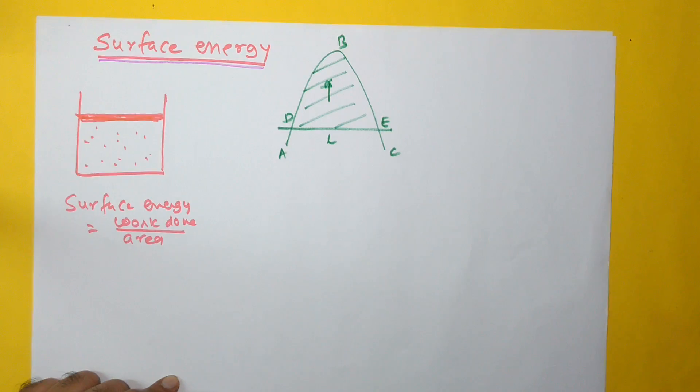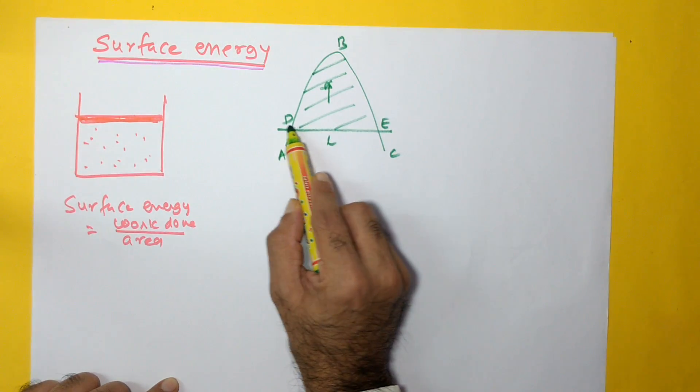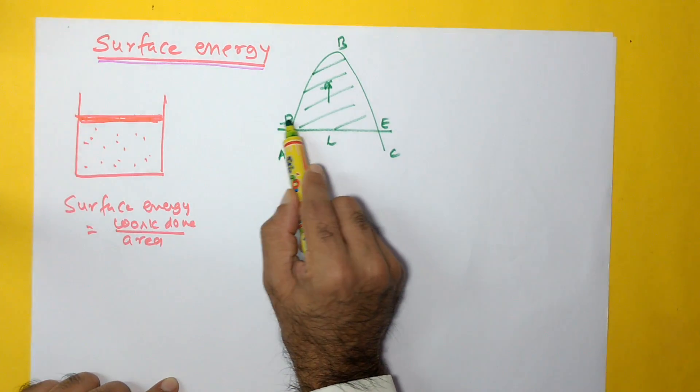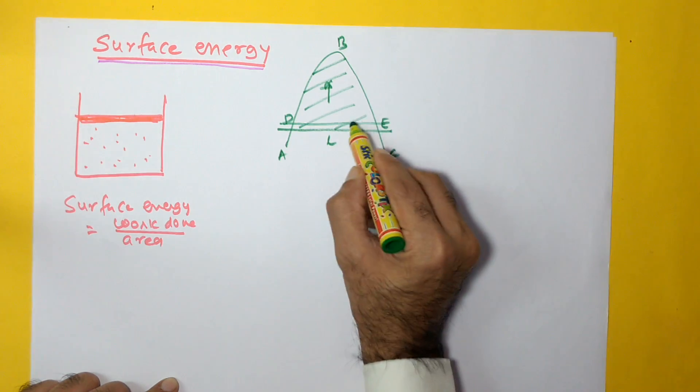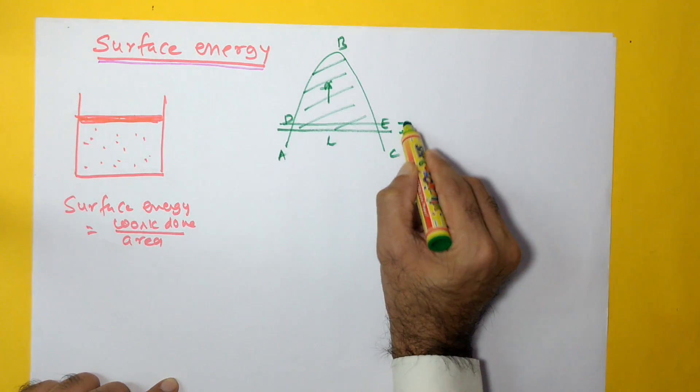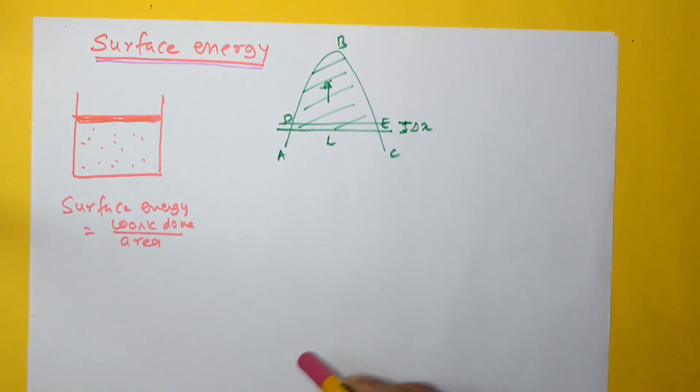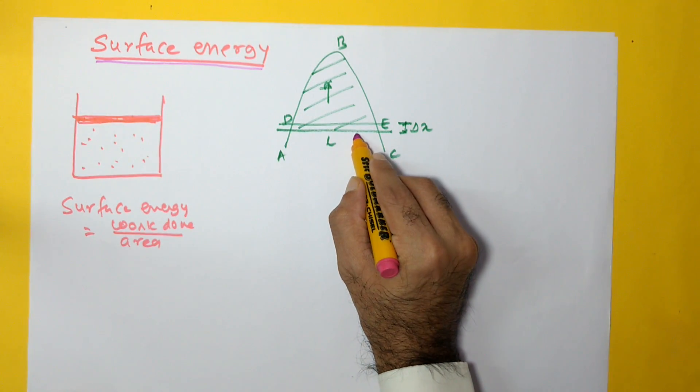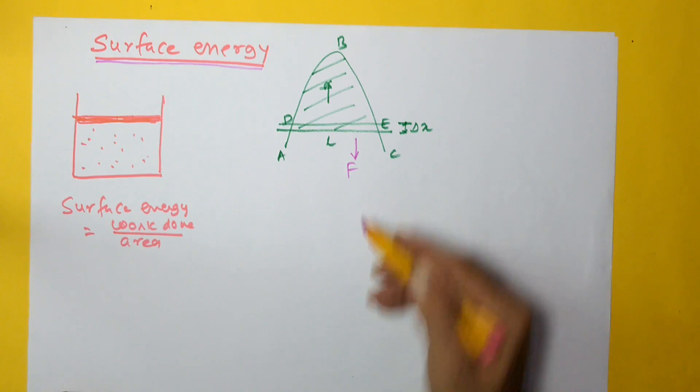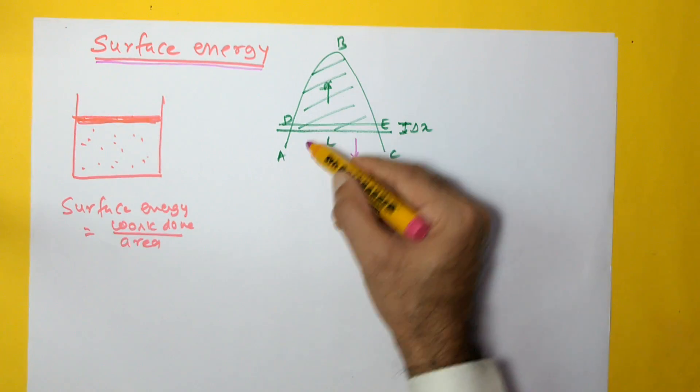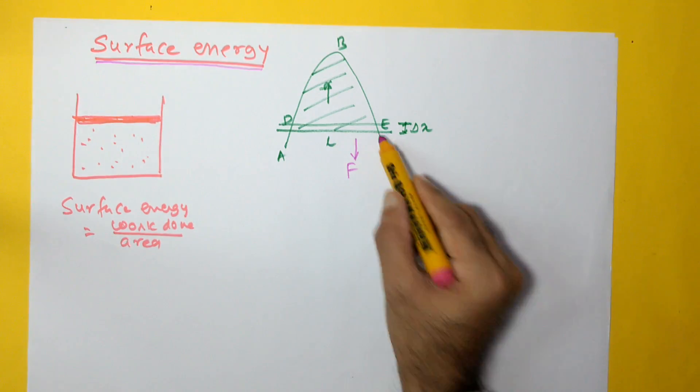Let us say that because of that, this wire moves inside by a small distance delta x. Now, if we do not want the wire to move in this direction, in other words, if we want to overcome the force of surface tension, what we may have to do is apply a force F in this direction so that we are able to overcome this force and the wire does not move and remains over here.